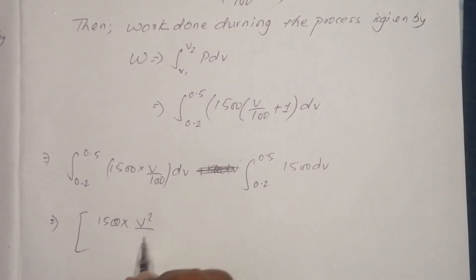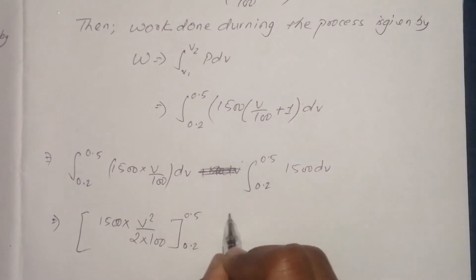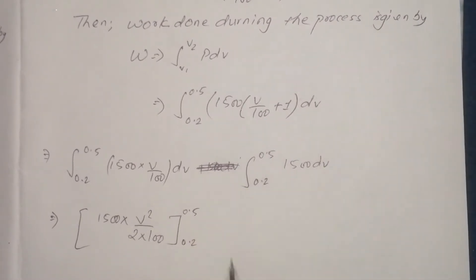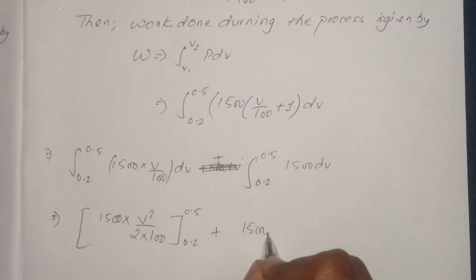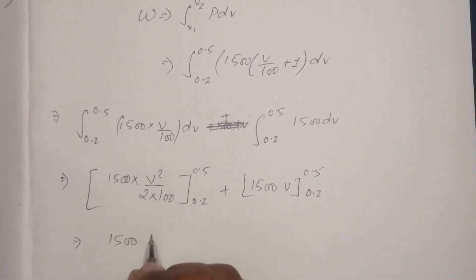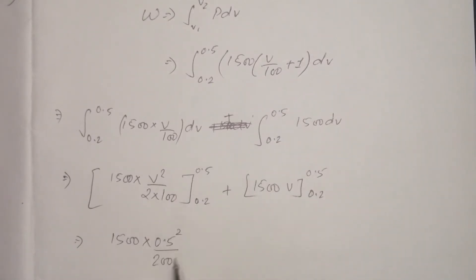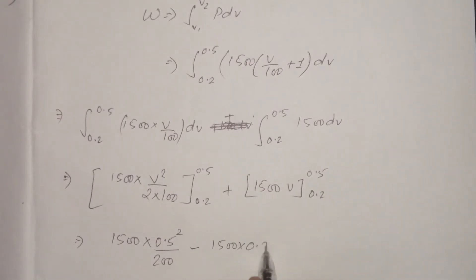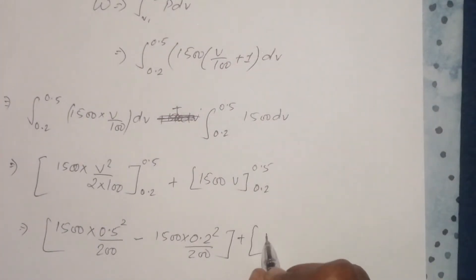Integrating from 0.2 to 0.5: we split it into two parts — the integration of (500/V) dV from 0.2 to 0.5, plus the integration of 1 dV from 0.2 to 0.5. We compute 0.5 squared divided by 2, and 0.2 squared divided by 200, applying the limits.